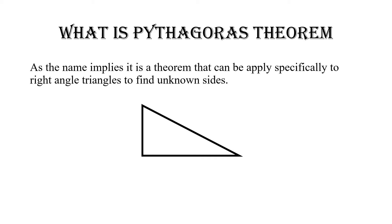Here we have an example of a right angle triangle. This side is known as the hypotenuse. The easiest way to identify the hypotenuse is that it will always be the side opposite or facing the right angle — the 90 degree angle. The hypotenuse is also the longest side in any given right angle triangle.